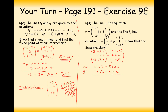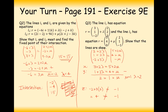Subtracting one equation from the other cancels the two lambdas, giving 2 equals 1 plus mu, so mu equals 1. Using the second equation, lambda equals 2. Now check the z components: substituting lambda equals 2 gives minus 2 plus 3 times 2, which equals 4. Substituting mu equals 1 gives minus 1. These do not equal each other, so the z component does not match up when the x and y components do.